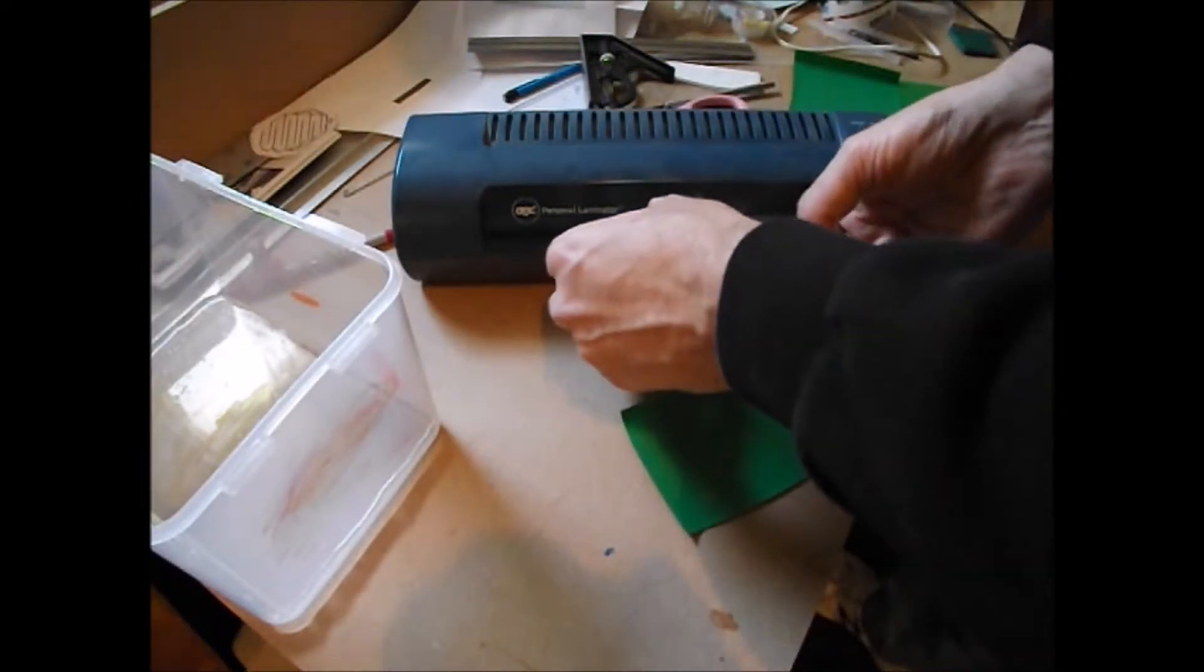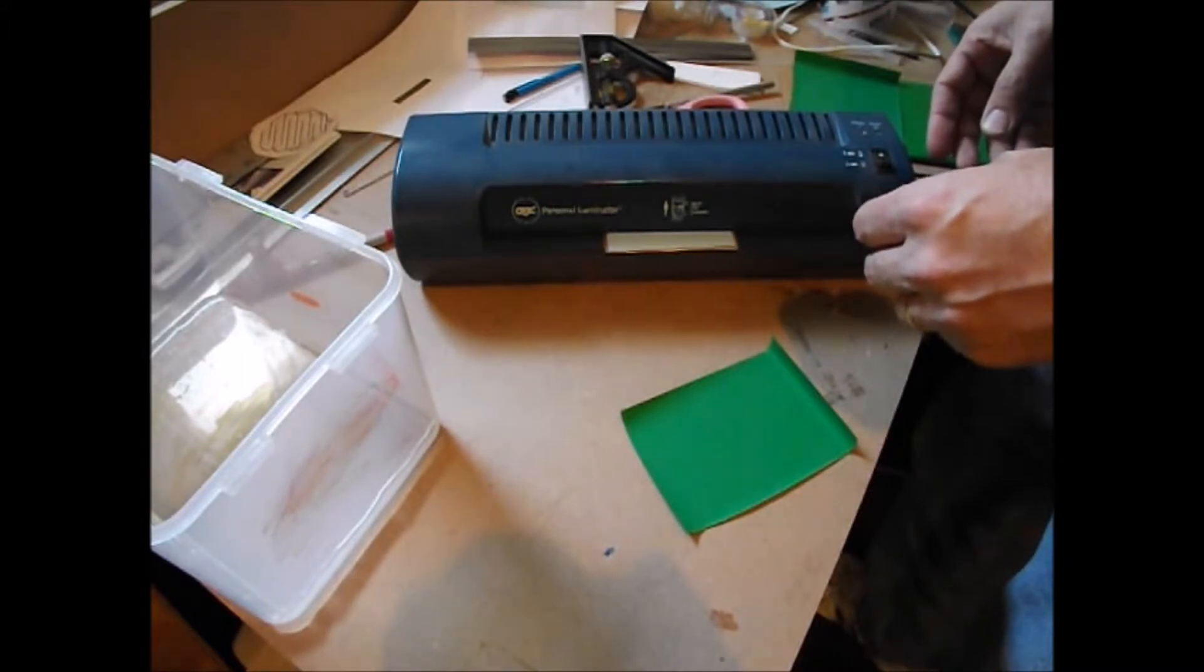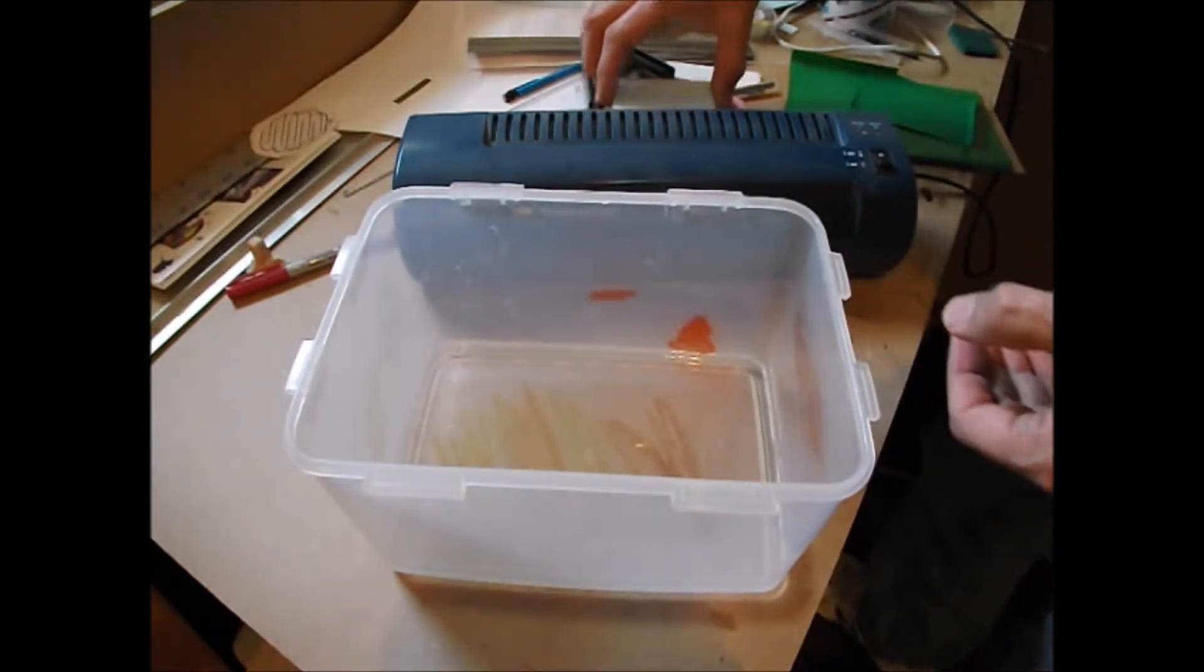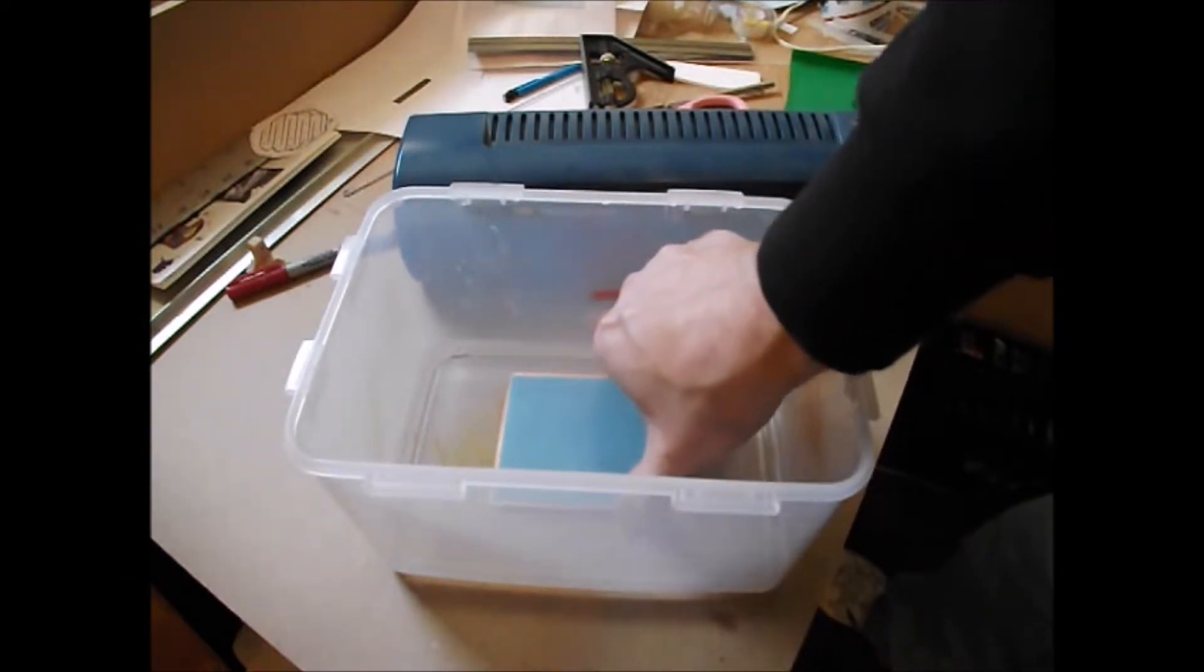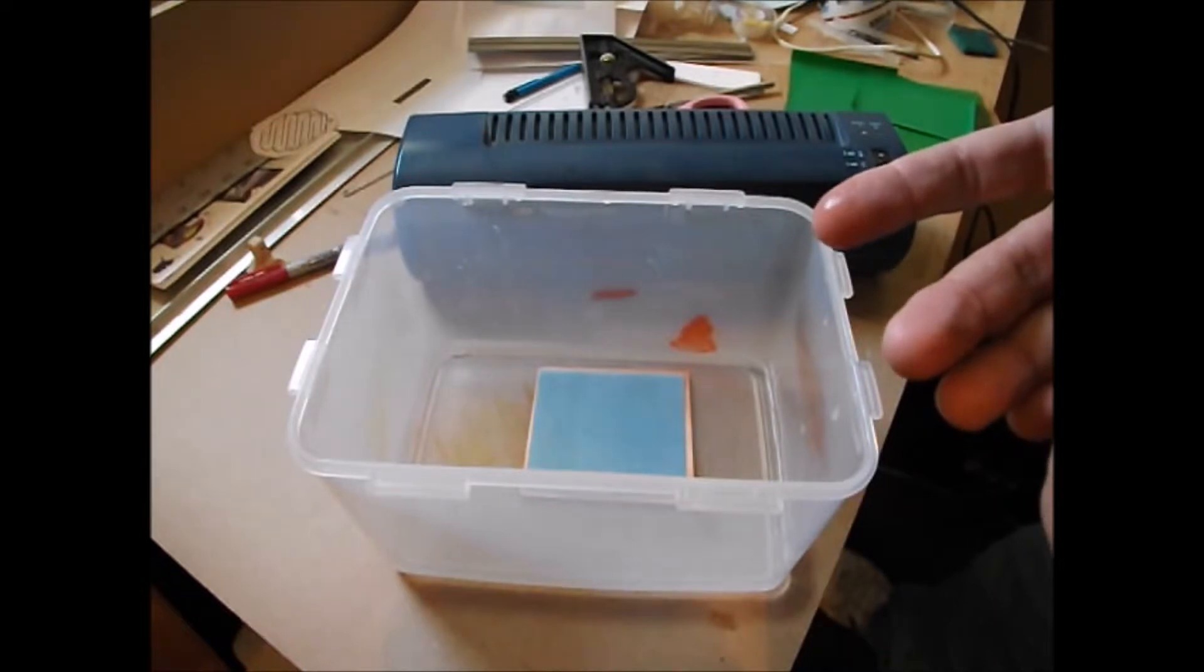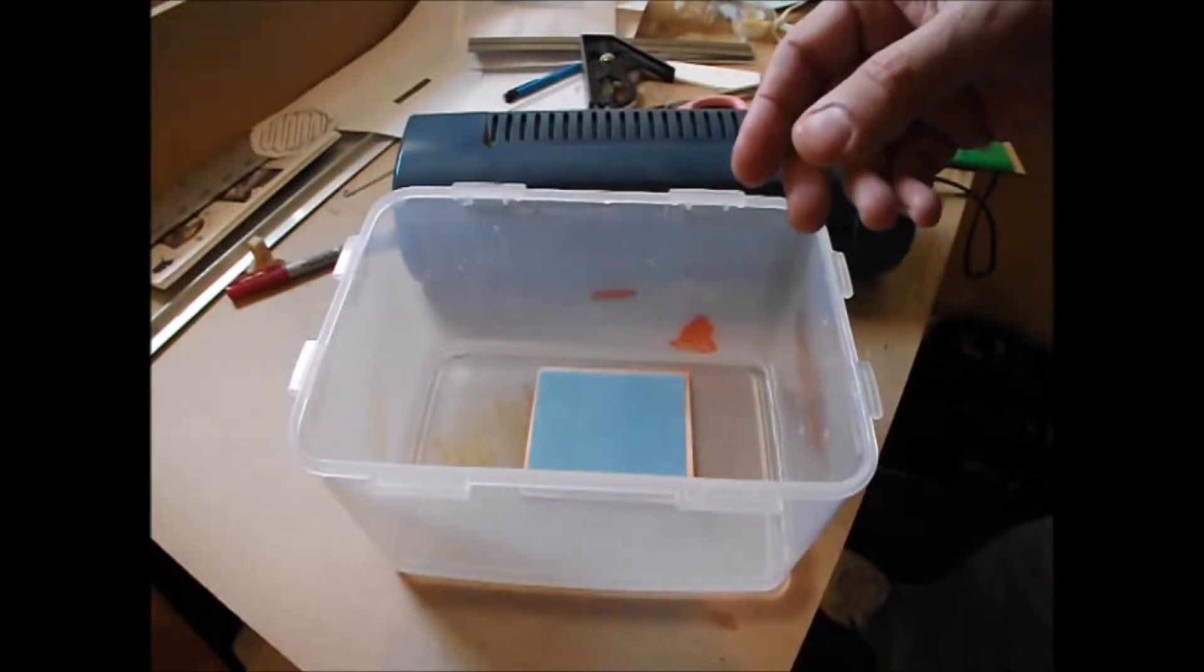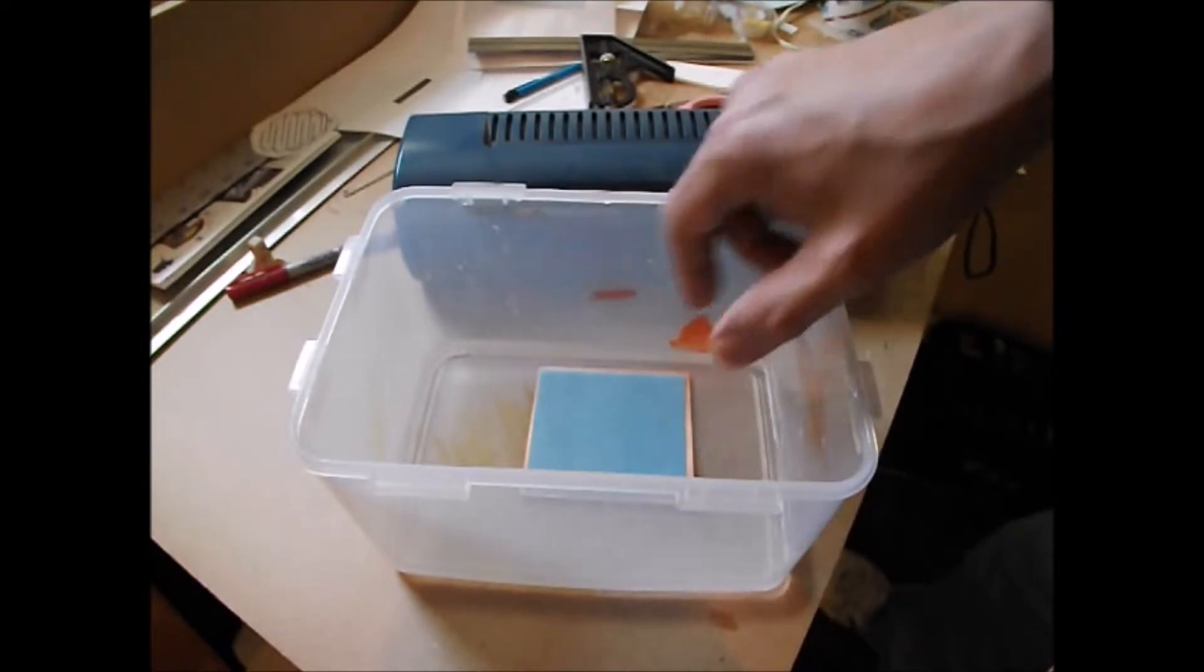And you turn it around and go the other direction and feed it in again. And as soon as it comes out the second time it goes into the water. Now that transfer paper soaks up that water pretty good and in a minute or two the glossy side of that paper has got a cellulose coating on it. And that cellulose coating will dissolve in the water and completely release the toner. We'll leave that in there for a minute.